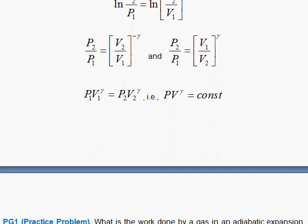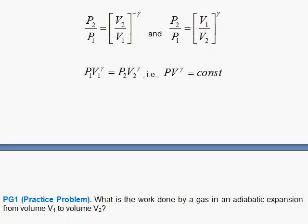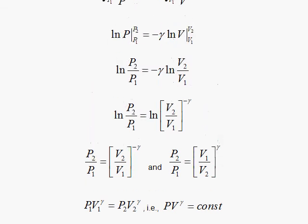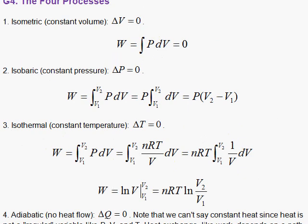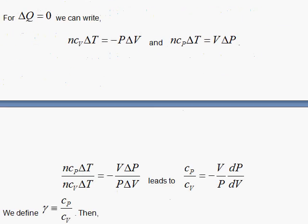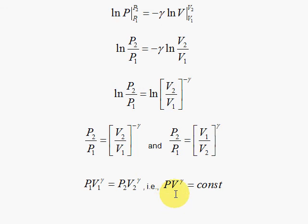For a practice problem, how about if you calculate the work done by a gas in an adiabatic expansion from volume V1 to volume V2. You set that up like we did the other one, where we replace the pressure with what the pressure equals. The pressure is going to equal some constant over V to the gamma power, and you'll be able to do that integral.